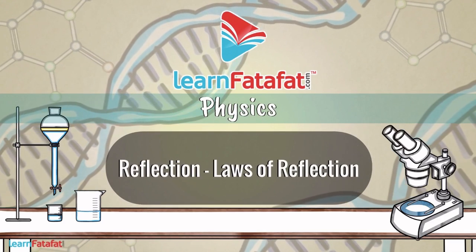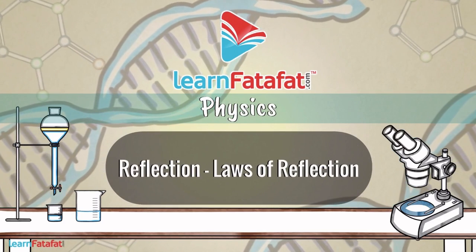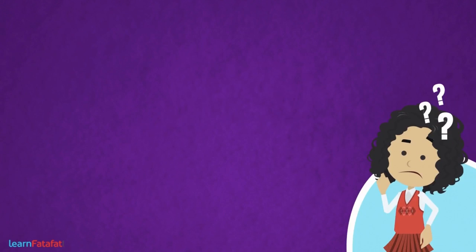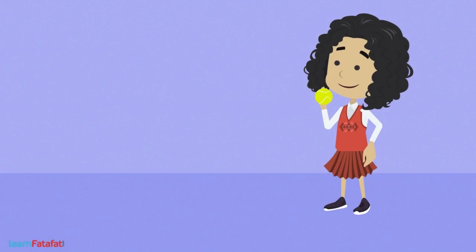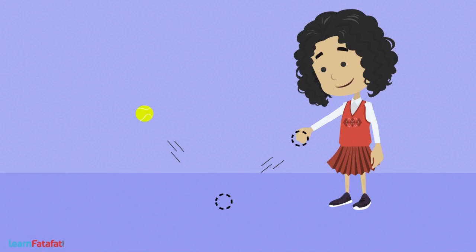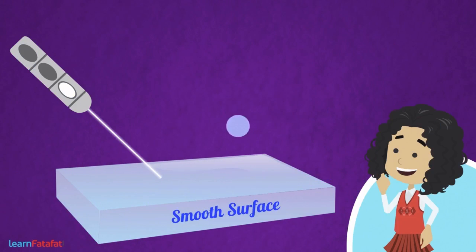So let's crack it. Reflection laws of reflection. Imagine what will happen if light is allowed to strike over a smooth surface. To understand this, let us take a rubber ball and throw it on the ground.